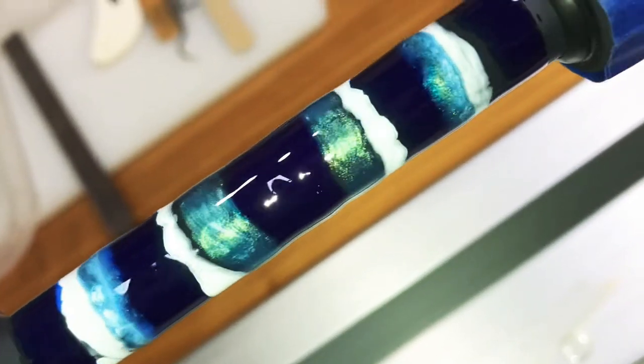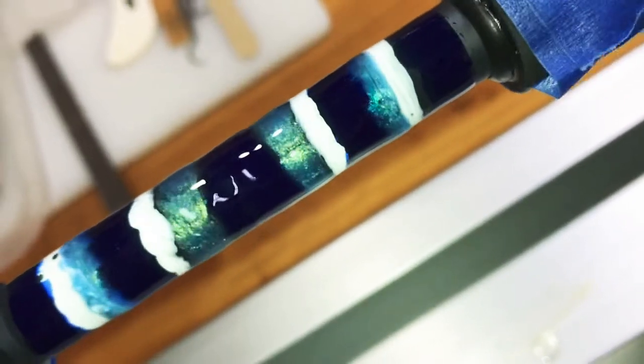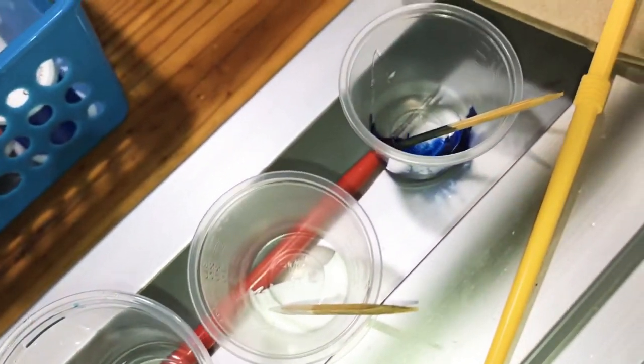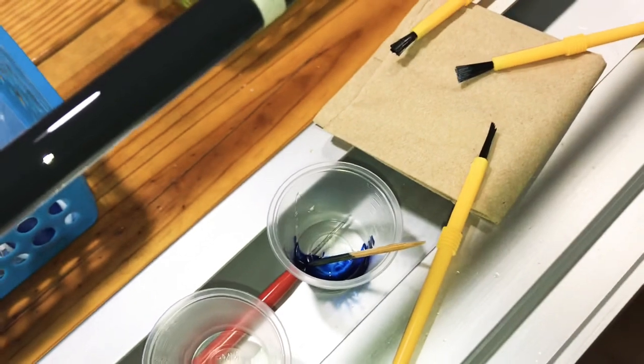I took a toothpick and a paintbrush, depending on how thick or thin I wanted the lines, and put just strips of the different colors. I alternated from the dark blue to the white to the light blue.